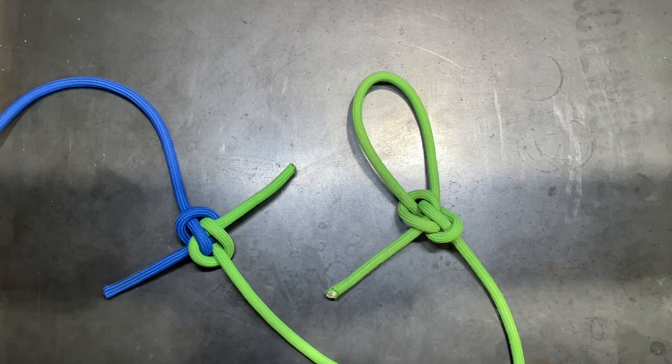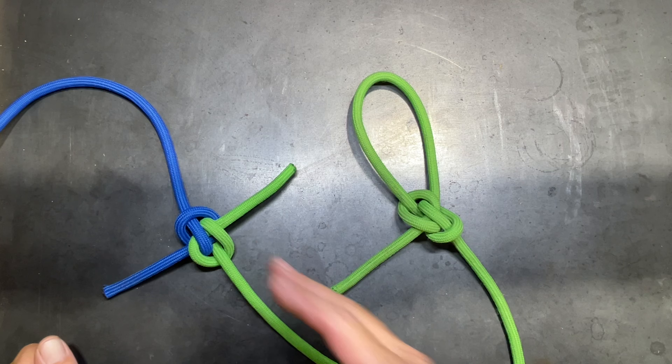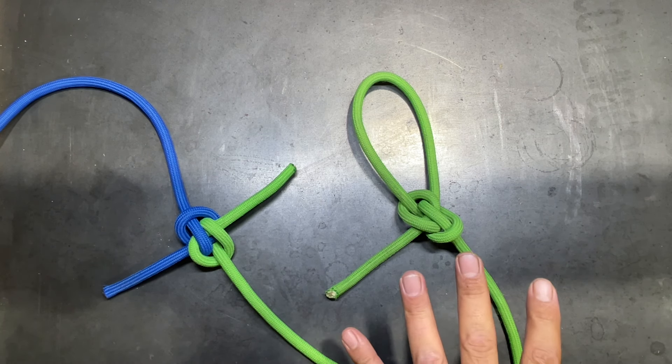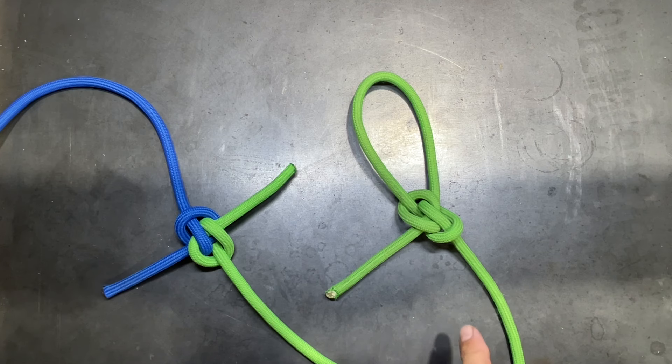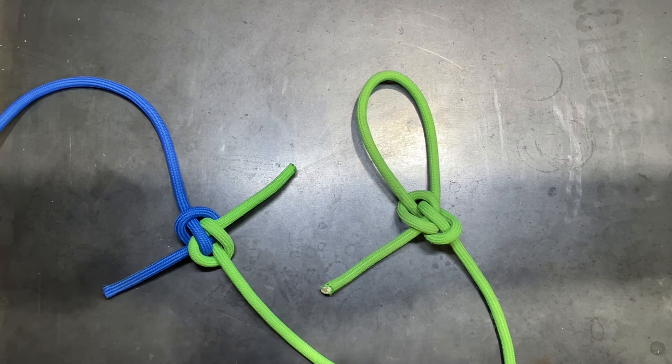In many regards, these two knots are better than their bowline and sheet bend counterparts. The Zeppelin loop is the one we're going to learn how to tie first, and once we know this method, it's pretty easy to tie the Zeppelin bend.